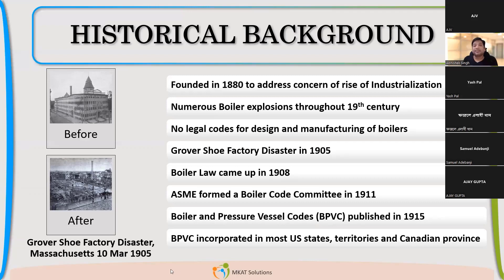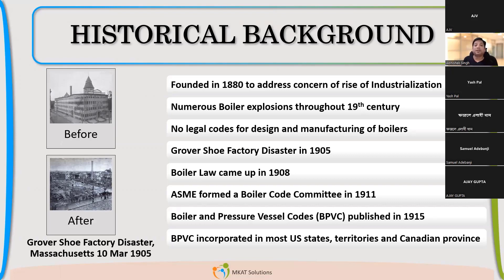The main turning point was the disaster in Massachusetts at a shoe factory, where a boiler exploded. This led to people finally meeting and asking what was going wrong — we need to monitor every step. If something happens, you have to find out why. But if everything is being made without any code or standard and every component is different, it's really difficult to find out what went wrong. From material procurement to design, welding, forming the vessel, and quality checks — each step matters. With thousands of steps done differently across companies, finding the problem itself becomes very challenging.